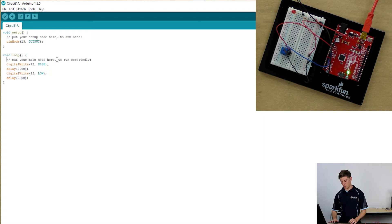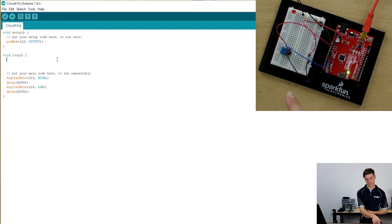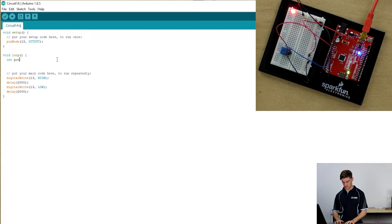At the top of the loop function, we want to write something that is going to store the value of the current potentiometer position or the current potentiometer value. We're going to call that pot pin, and then we're going to close it.